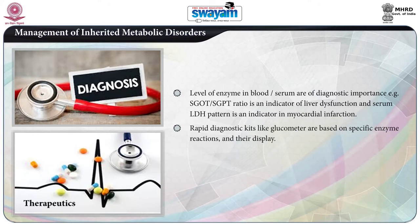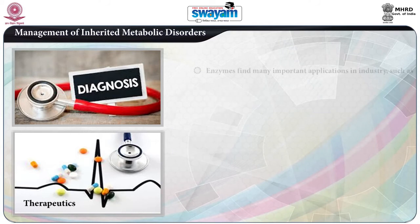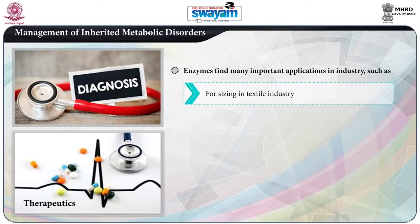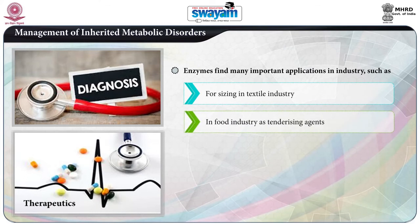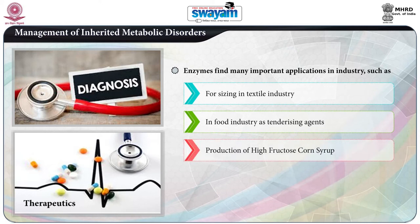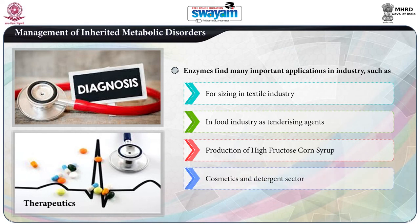Rapid diagnostic kits like the glucometer are based on specific enzyme reactions and their display in the form of a color. Enzymes can also be used therapeutically as digestive aids. In industry, amylase is used for sizing in the textile industry, papain is used in the food industry as a tenderizing agent for meat, and glucose isomerase is used in the production of high-fructose corn syrup. Enzymes are also used in cosmetics and detergent sectors.